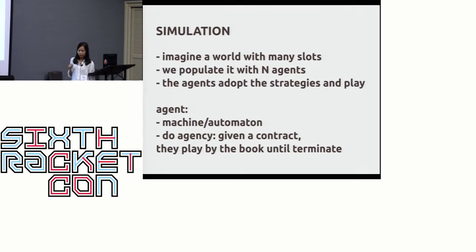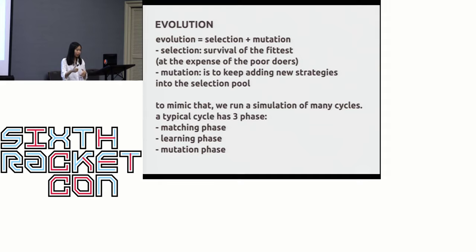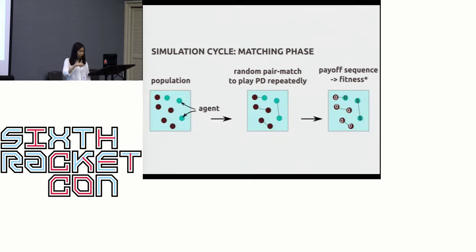Let's come to the simulation. Imagine a wall with many slots, so we populate them with agents. These agents will adopt the strategy and they will play the game. We give them a contract of a strategy and they will play by the book until they terminate. We try to mimic evolution. Evolution has two subprocesses: the selection process and the mutation process. The selection process is to select the fittest at the expense of the poor doers. The mutation process is to keep adding new strategy into the selection pool. We run simulation of many cycles, and one cycle will have three phases: the matching phase, the learning phase, and the mutation phase.